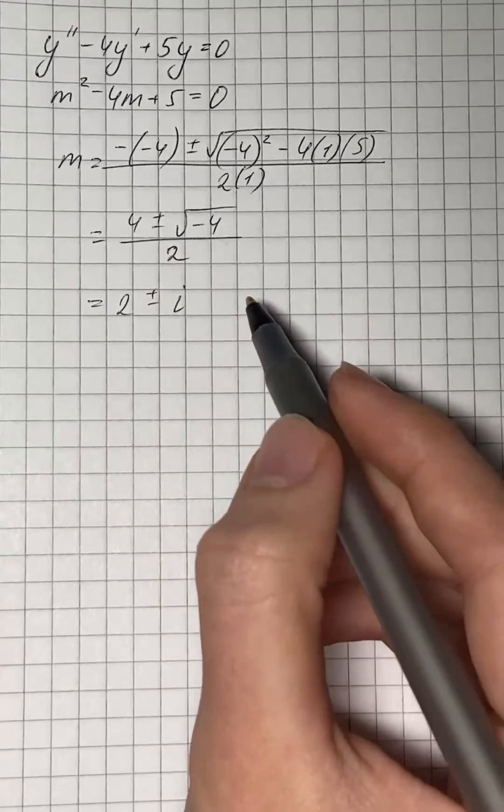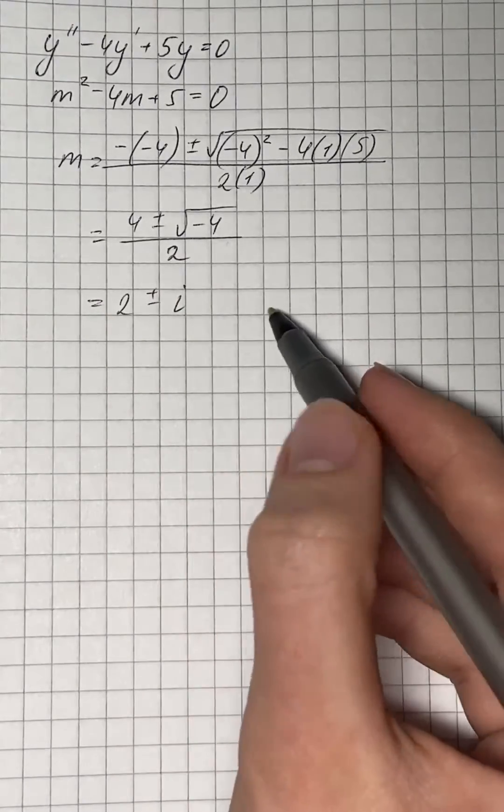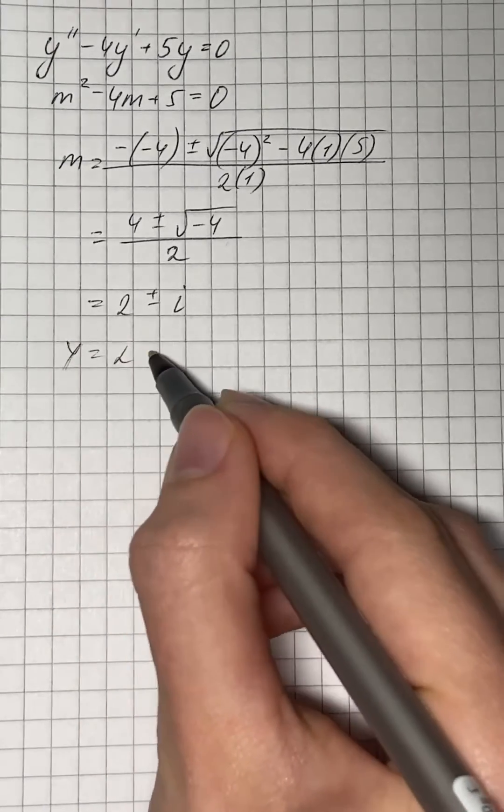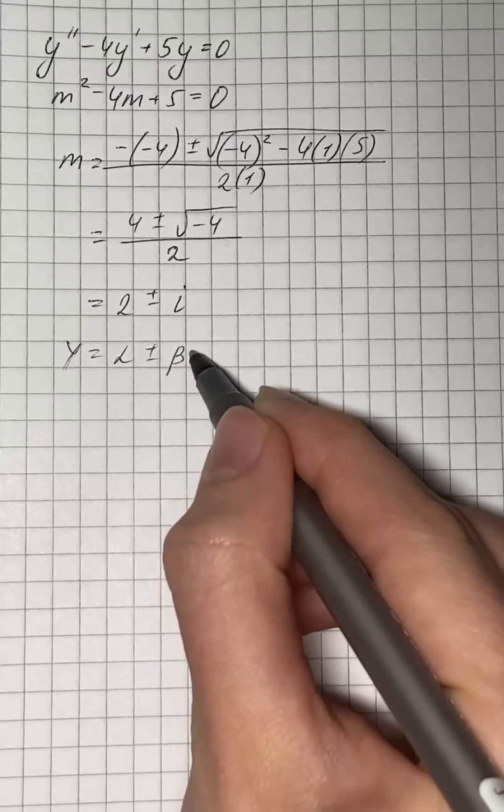We get that our roots are complex and it's in the form of alpha plus or minus beta i.